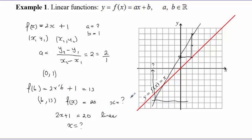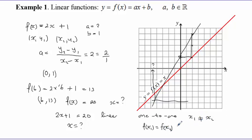One important property to observe is that linear functions are one-to-one functions. This means we cannot find two different values x₁ and x₂ such that the function gives the same output for both. Whenever the two input values are different, we get different output values. That is the definition of a one-to-one function, and it's a very important property.